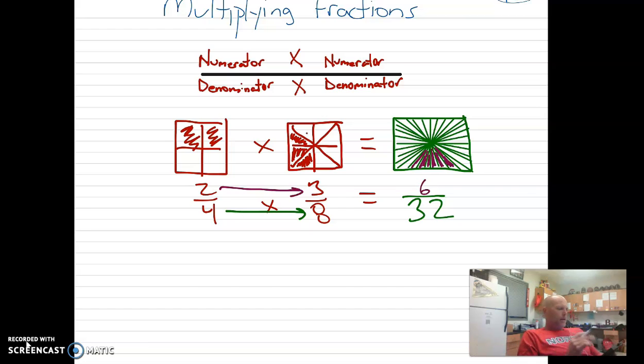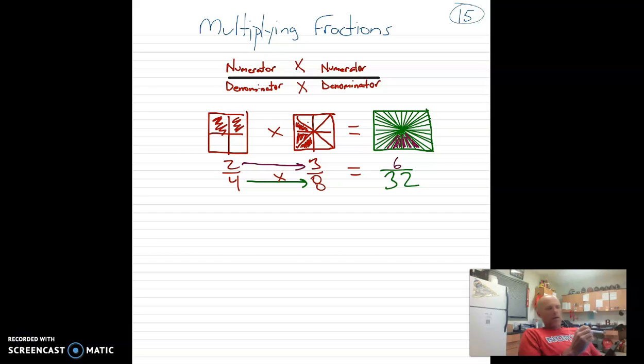Do you notice that? Notice that in the first one, fourths, kind of large parts, and then it goes to 8 and gets even smaller, right? And now if you look at 32nds, it's even smaller, okay? Alright, so that's what it looks like visually, okay?